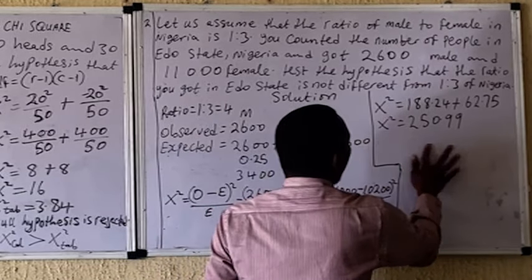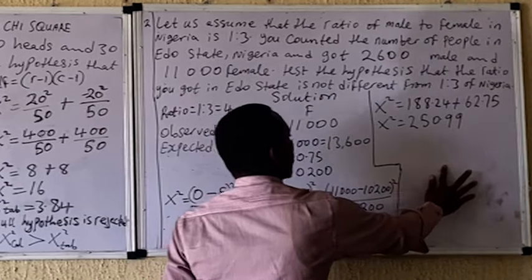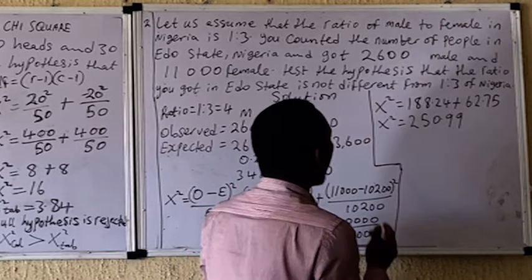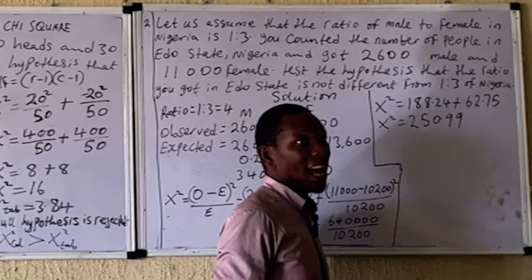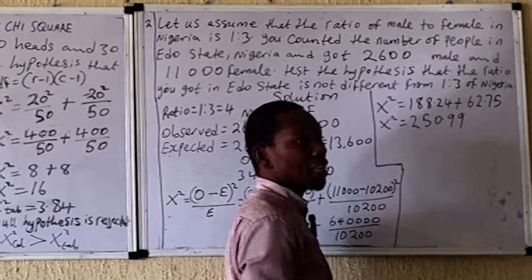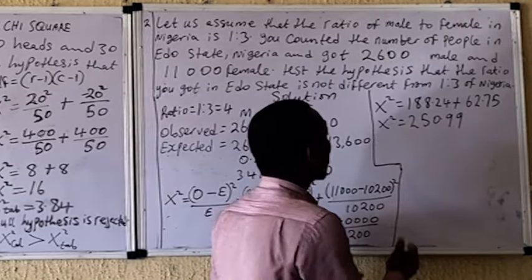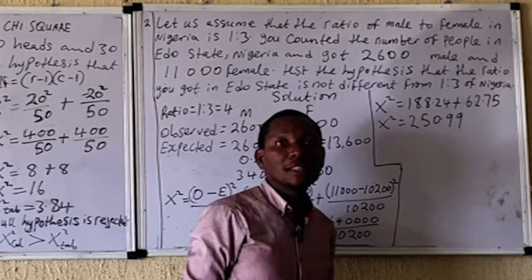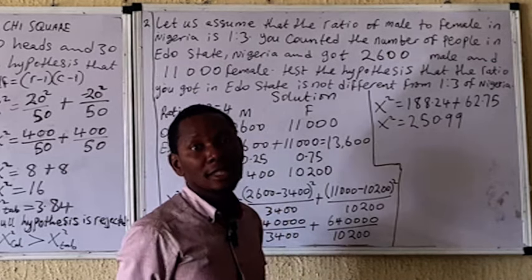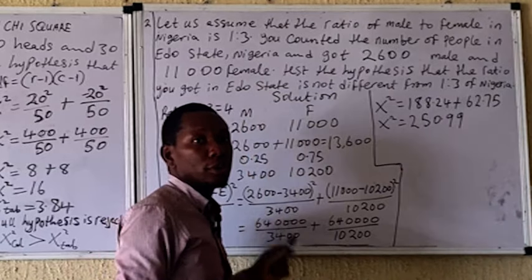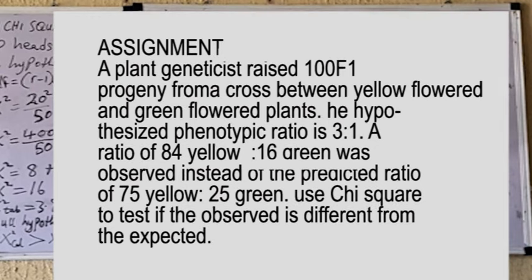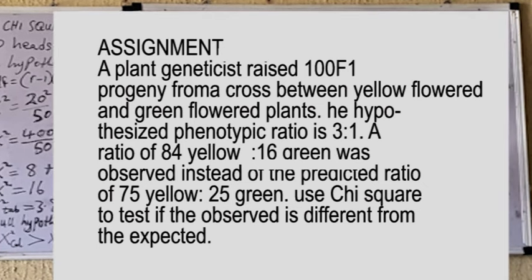Once you have the calculated value, check your chi-square table to compare the calculated value with the tabulated critical value. Since my calculated value is higher than the tabulated value, I also reject the null hypothesis and state that the observed value is significantly different from the expected ratio of Nigeria. If an assignment is displayed on the board, attempt it and send your answer to biologyaccess@gmail.com. Please subscribe to support this channel.